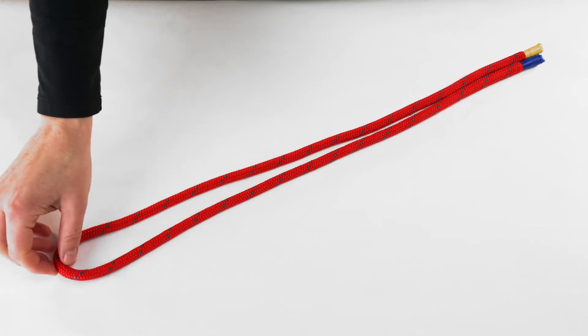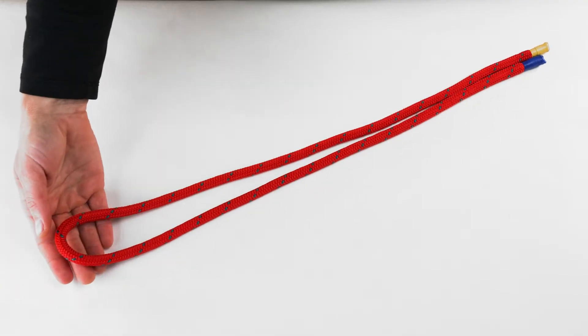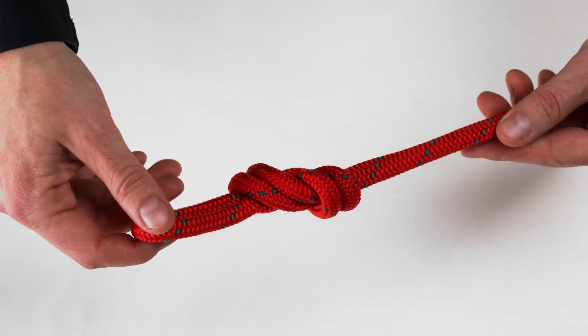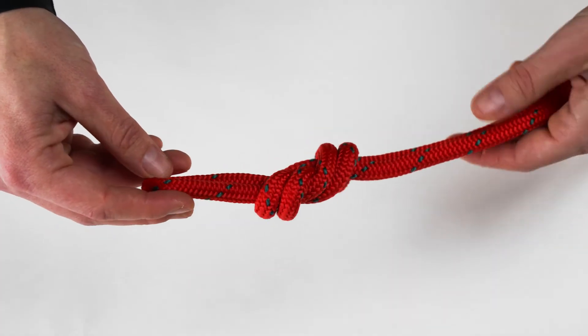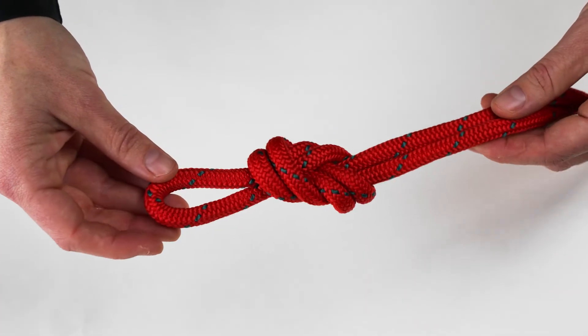By doubling over the end of the rope to form a bite, a figure of eight knot is tied to create a loop in the end of a rope. It is important that this knot is only loaded in one direction.